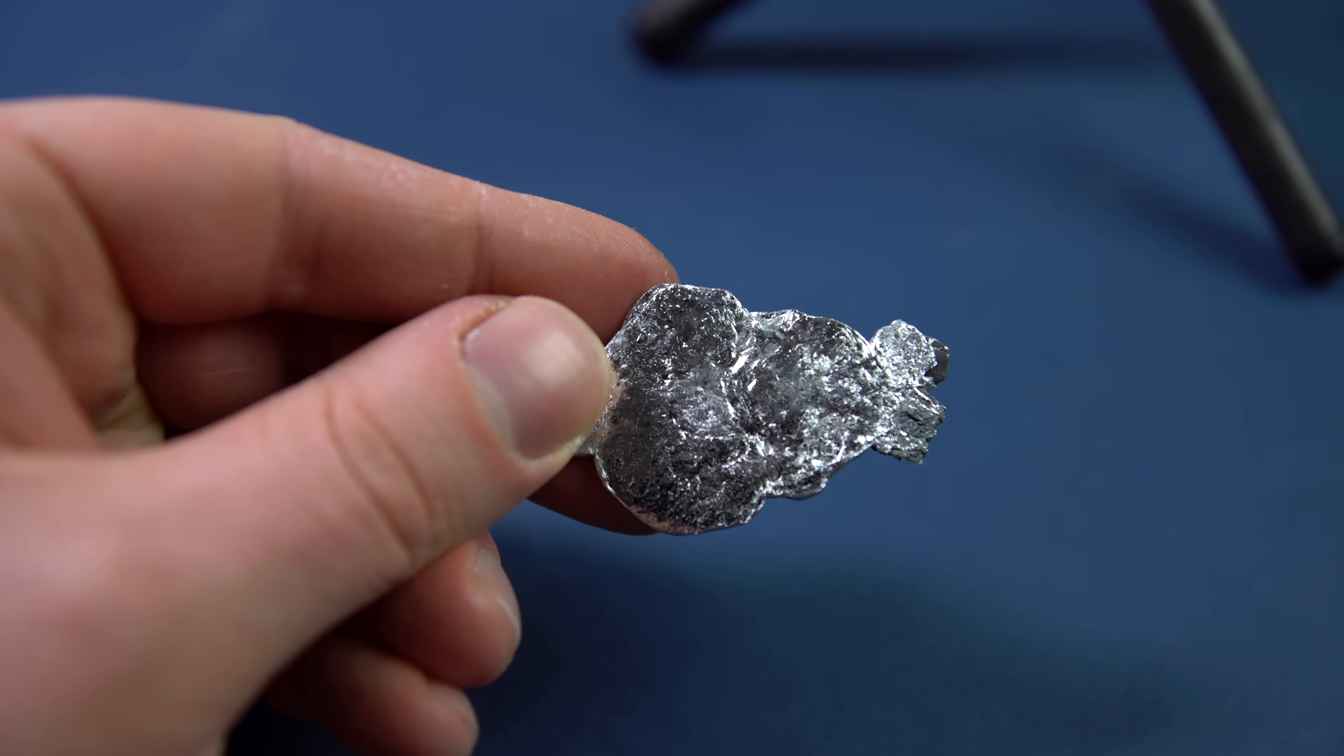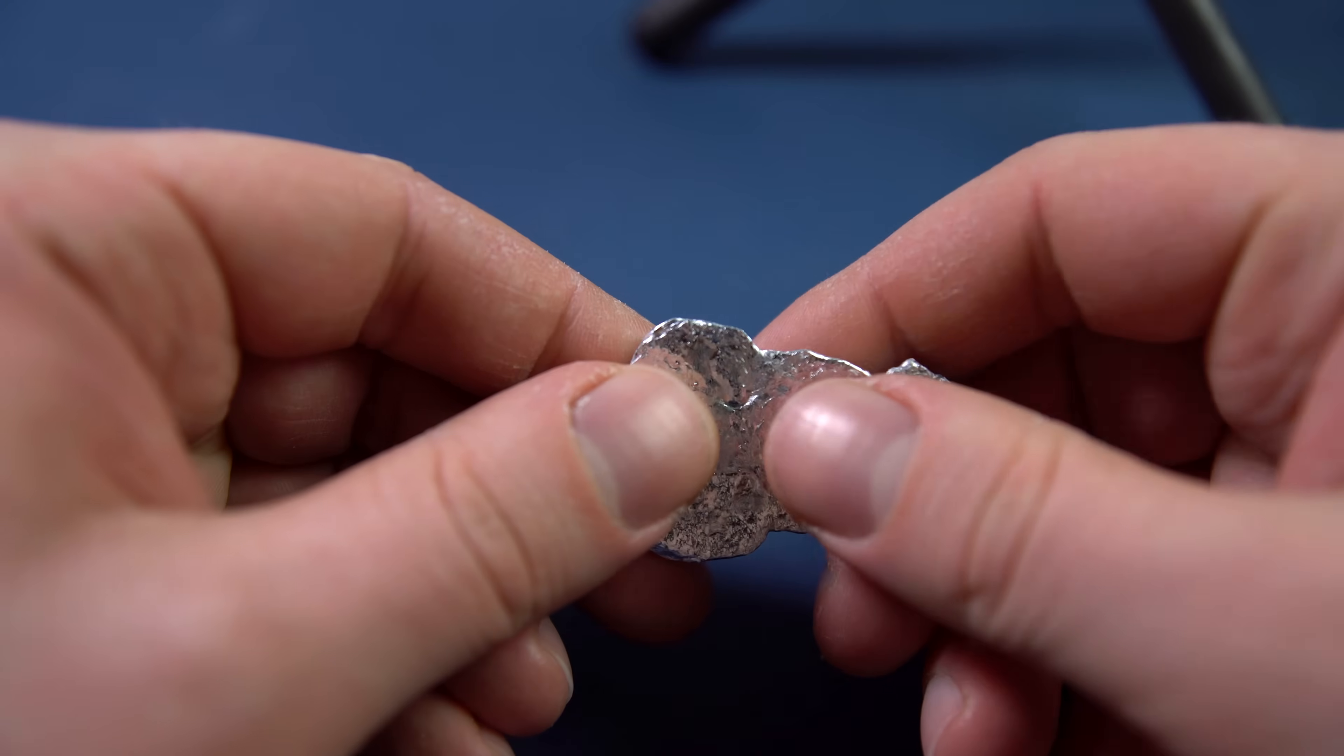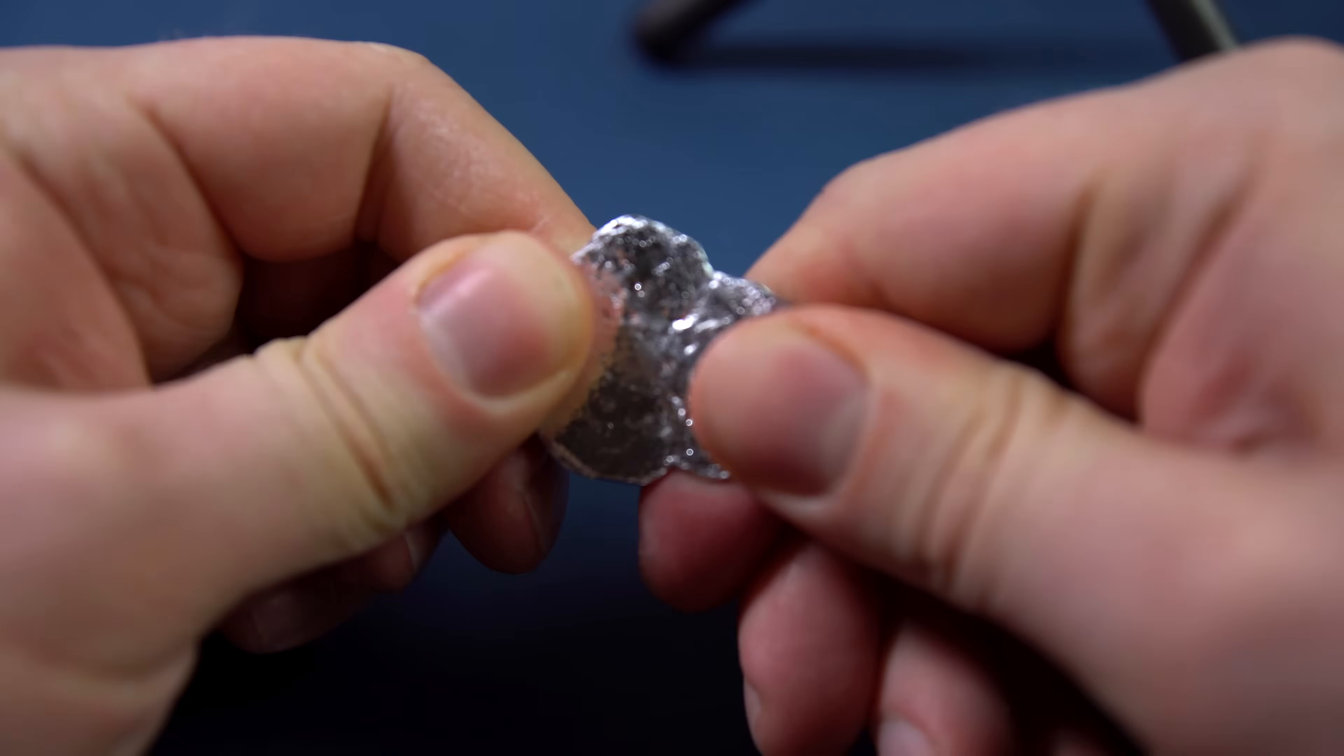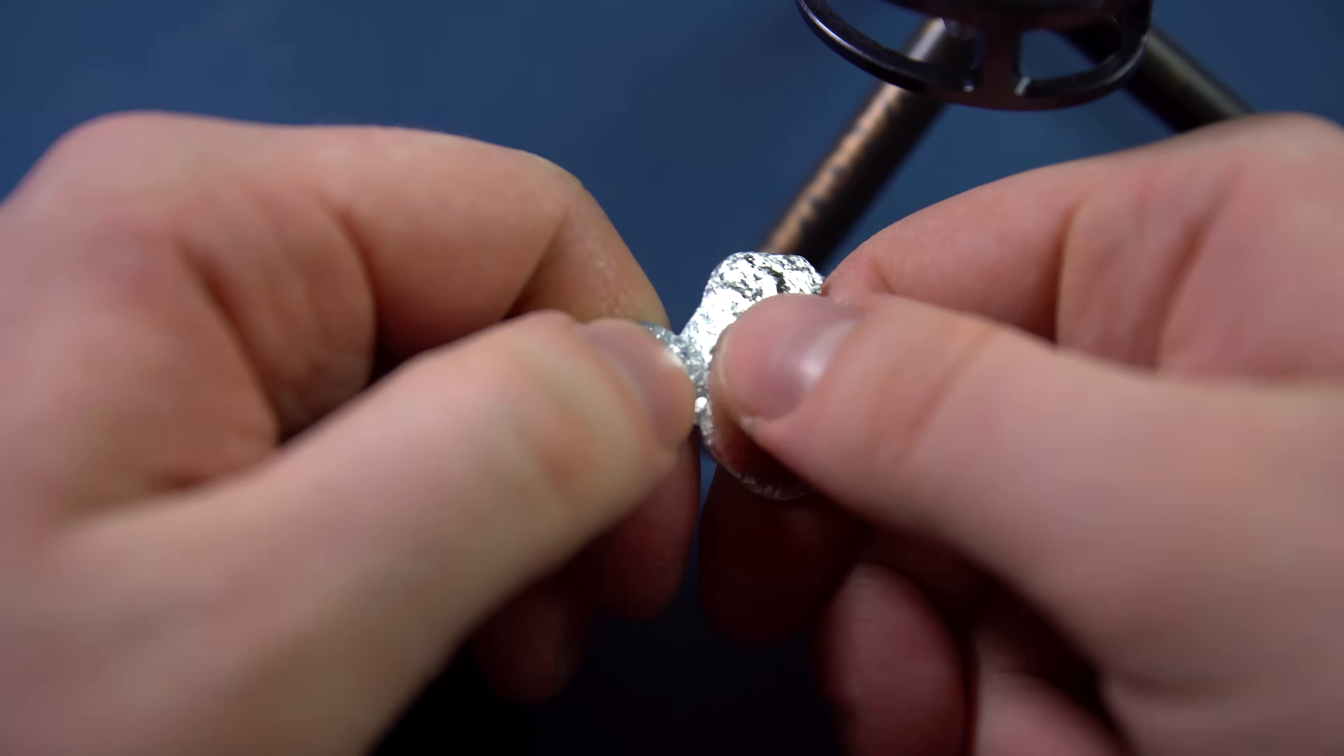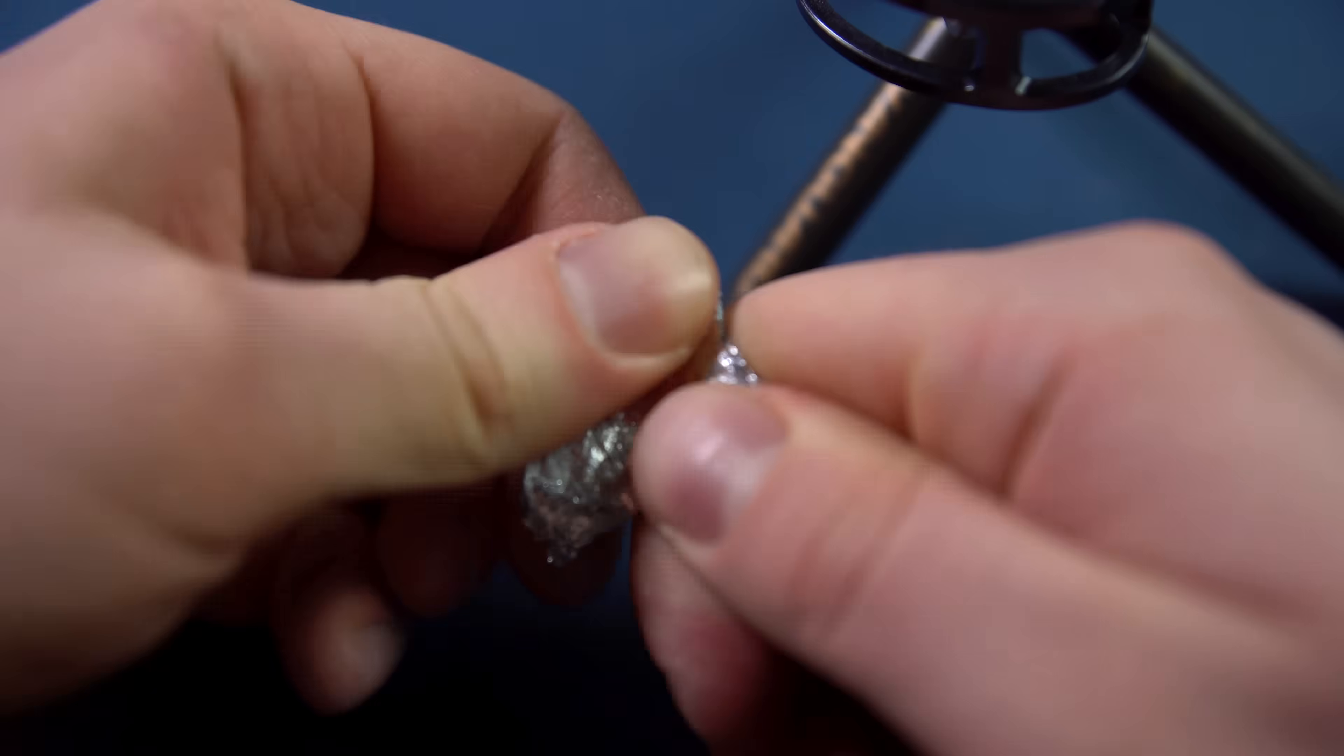If you use high purity zinc to melt such pieces and then you bend them, you will be able to hear such an unusual crack. Such cracks are caused by the deformation of the crystals within the metal itself.